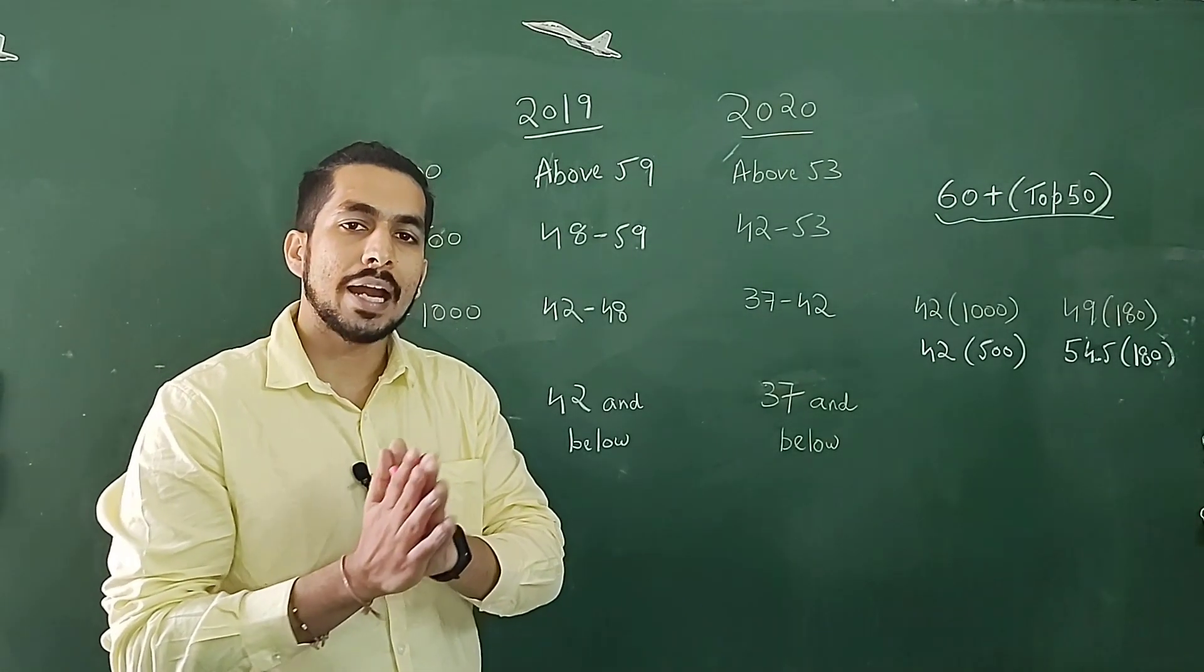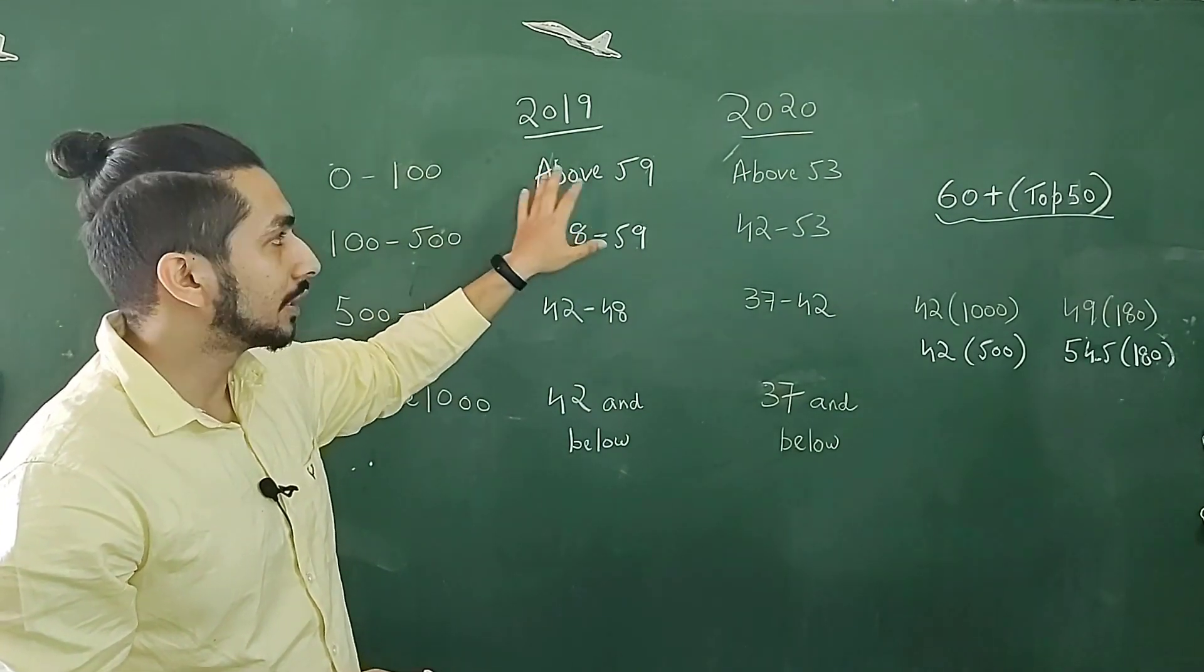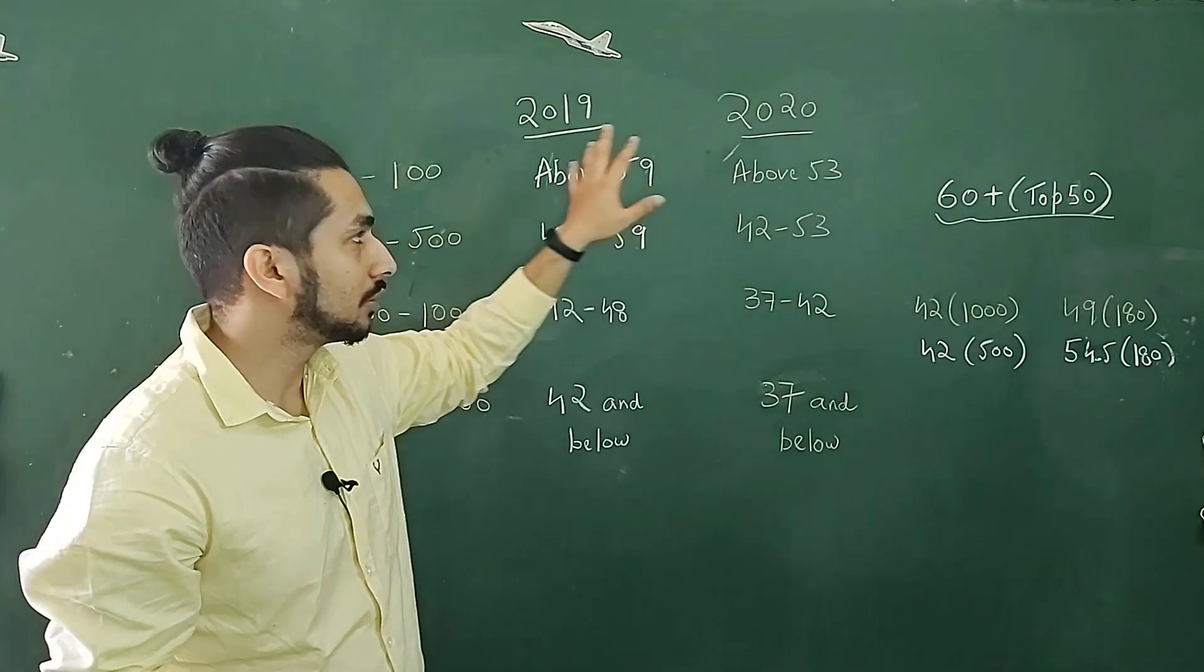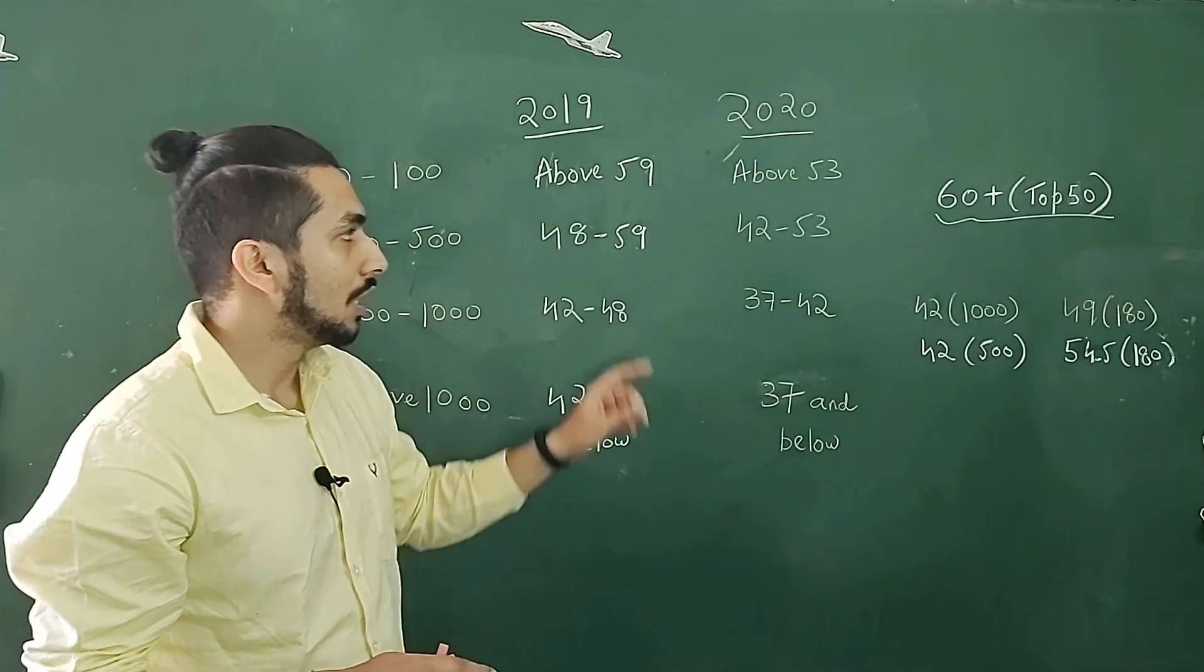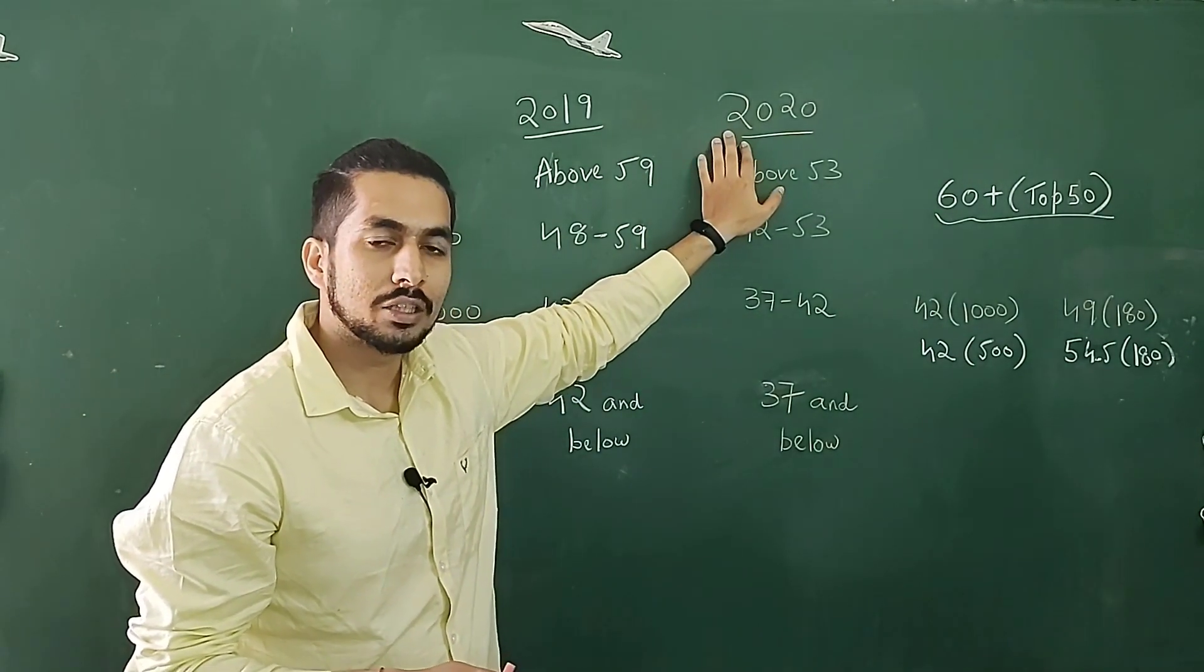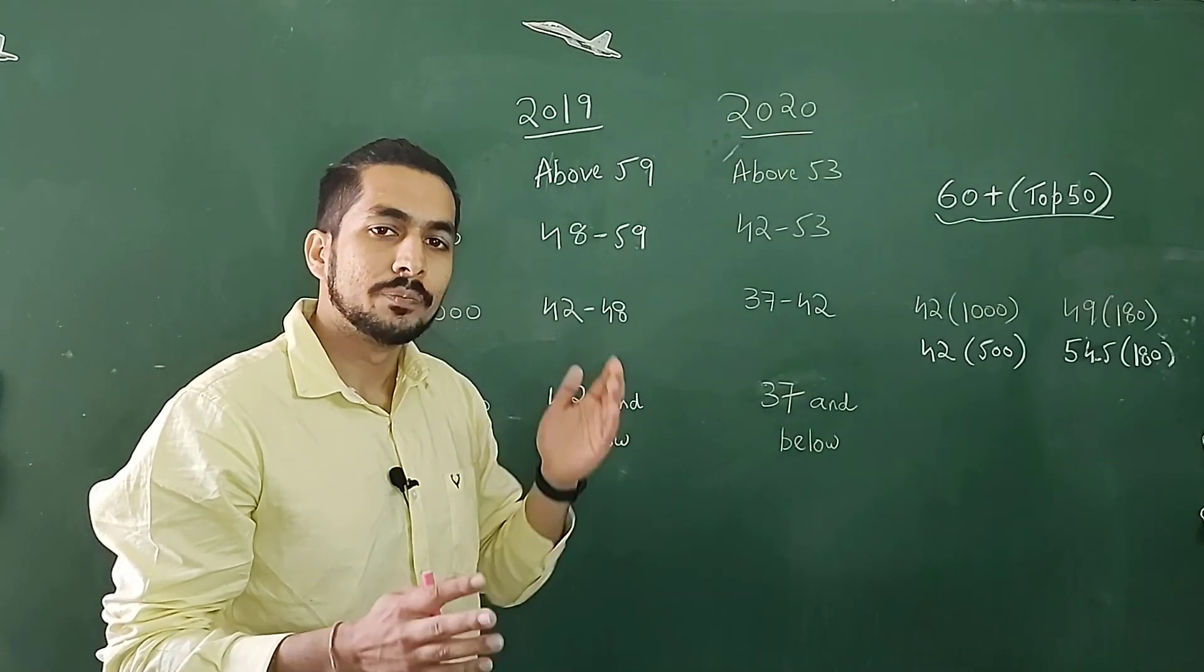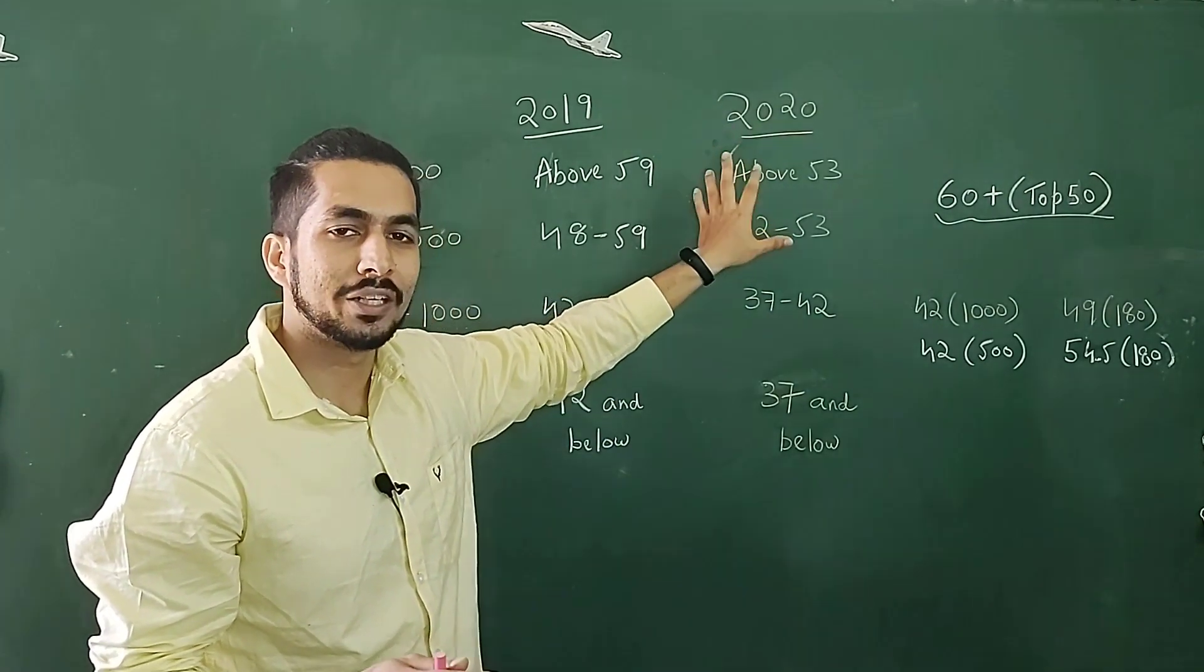I'm going to provide you a correlation between the marks and the rank. And secondly, I would give you a brief idea as to the different categories of ranks and what kind of avenues they open for you. Now, for correlating marks and the rank, I have taken the GATE 2019 examination scores and the GATE 2020 examination scores.